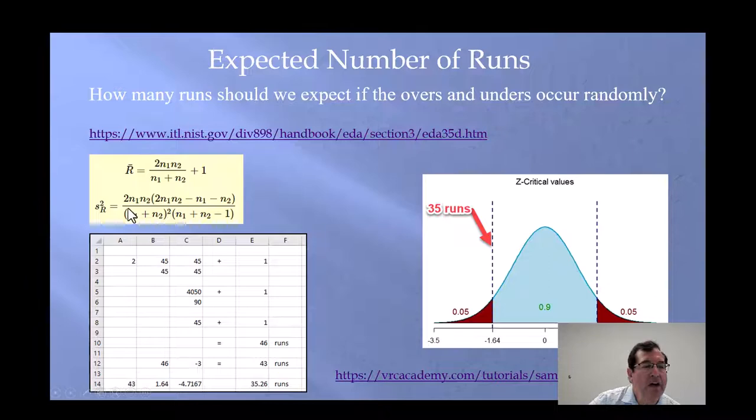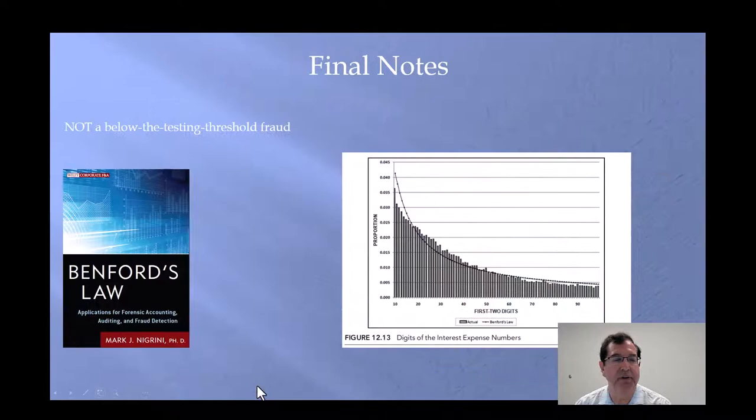Using the standard deviation, that's the variance actually, using the standard deviation, the concept of critical values over here, number of standard deviations, I calculated that there's only a 5% chance of fewer than 35 runs if the data is randomly distributed. One thing we would test is, do we have 35 or fewer runs? If we do, we might have a threshold in the works.